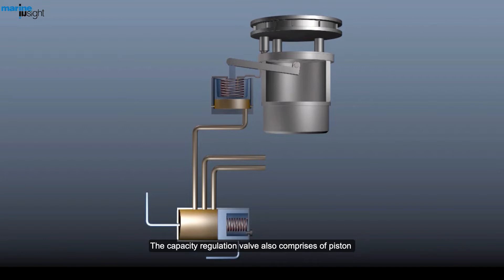The capacity regulation valve also comprises of piston and spring assembly which acts opposite to the crankcase pressure.